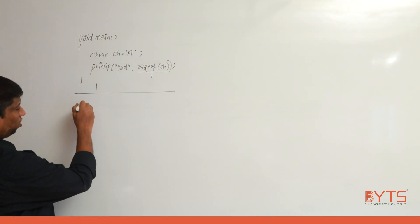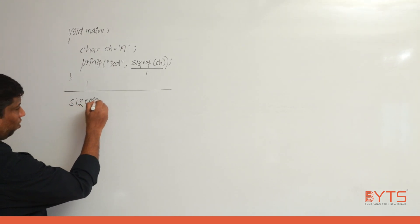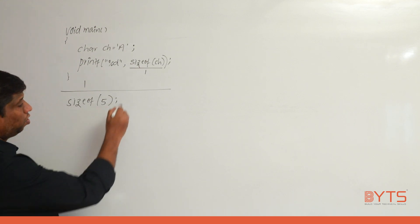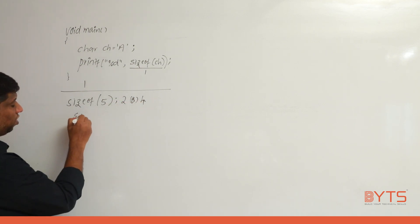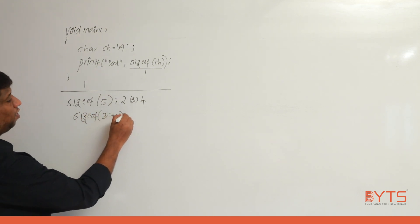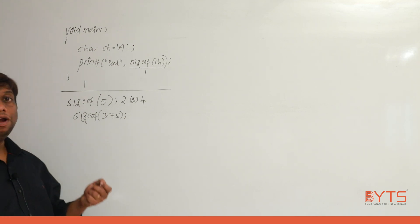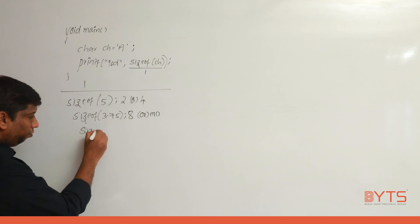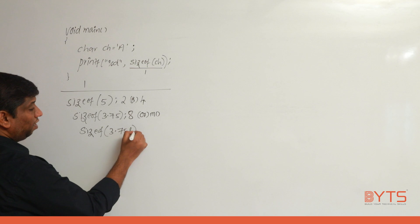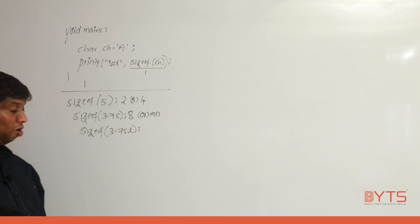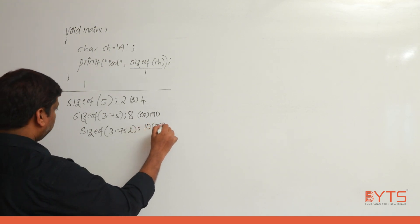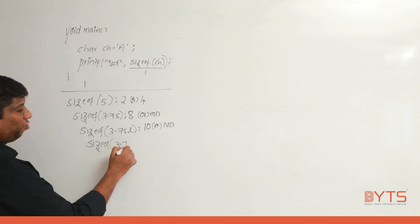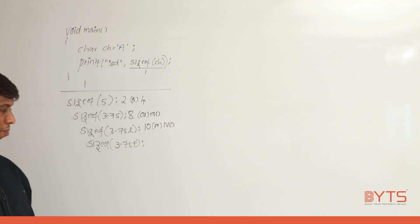Next, sizeof with constants. sizeof(5): 5 is an integer type, so the answer is 2 or 4. sizeof(3.75): 3.75 is a double type — not float — so size is 8 or machine dependent. sizeof(3.75L): 3.75L is long double, size could be 10 bytes or machine dependent. sizeof(3.75f): 3.75f is float type, size is 4 or machine dependent.